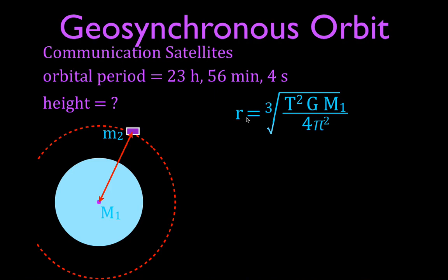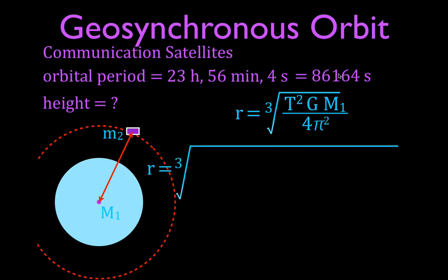This is the equation and we're going to plug the values in. We have to convert the time into seconds, because the gravitational constant has units of seconds in it. 23 hours, 56 minutes, and 4 seconds converts to 86,164 seconds. Plugging that into our equation, we get 86,164 seconds squared.